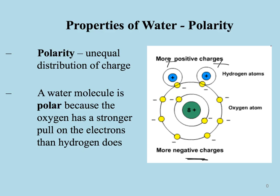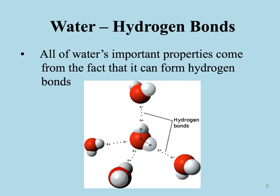What happens is the hydrogen of one water molecule is going to be attracted to the negative side of another water molecule. Opposite charges cause a weak attraction, and that's what forms a hydrogen bond. Here's a picture representation: the negative side of one oxygen is attracted to the positive side — the hydrogen — of another water molecule. This bond, represented by the dots, is a hydrogen bond, and it's a relatively weak bond because it's just an attraction between two opposite charges.